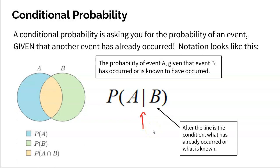Let's try to better understand this by looking at what's called a Venn diagram. In this Venn diagram, we see two interlocking circles. The circle on the left is A, the circle on the right is B, and the overlap is A and B in the middle. These would be two events that are not mutually exclusive because they can happen at the same time — that is the yellow overlap in the middle. The entire A circle is the probability of A, and the entire circle B is the probability of event B occurring.